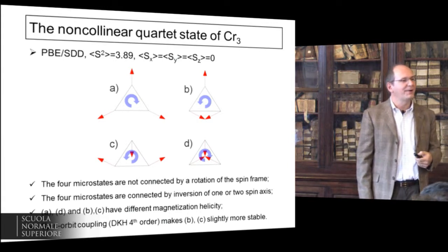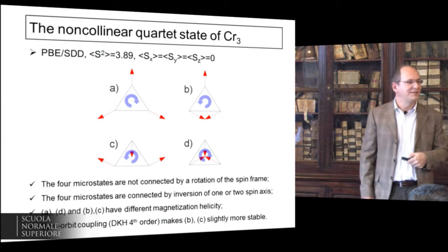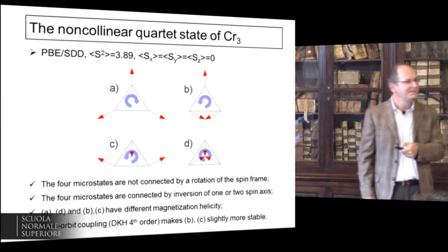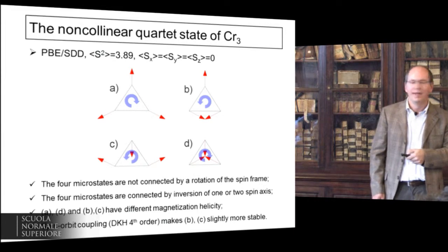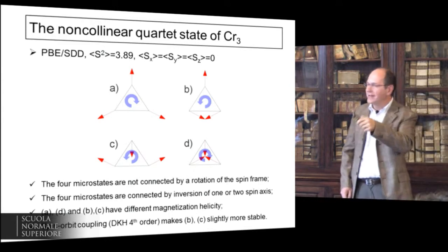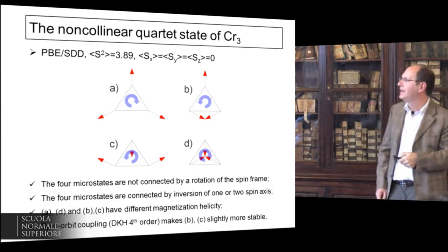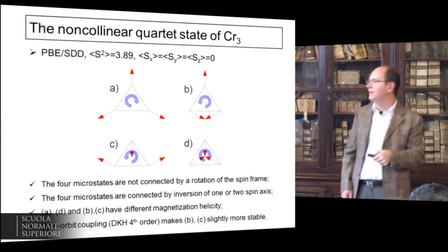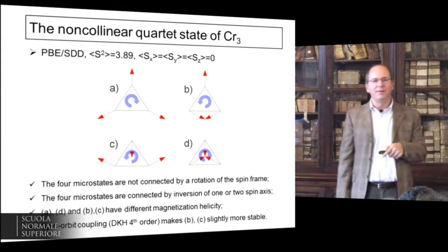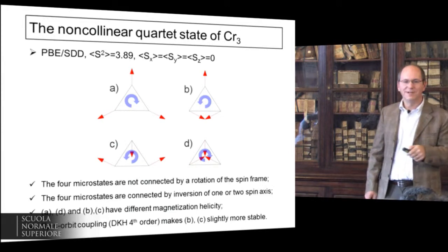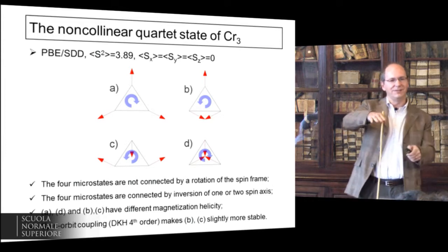So we said: what are the other three microstates of this quartet? These microstates are not connected by a rotation in spin frame — they are connected through inversion in one or two spin axes. These are all degenerate because they are microstates of a quartet. Going through the centers in the same way, you find that the magnetization rotates in different ways: two of them go clockwise, two go counterclockwise. Interestingly, if you add spin-orbit through the four-component Douglas–Kroll single-electron Hamiltonian, you break the symmetry of this quartet according to the chirality of the magnetization.